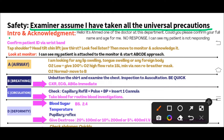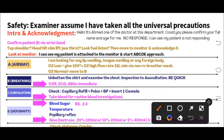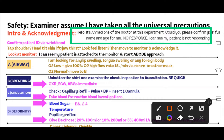Move toward the patient and introduce yourself: 'Hello, I'm Dr. Ahmad, one of the doctors at this department. Could you please confirm your full name and age for me?' The patient will give no response because they are unconscious. So you will say 'I can see my patient is not responding to me.' Confirm the ID by reading the patient's wristband to verify it is the correct patient.